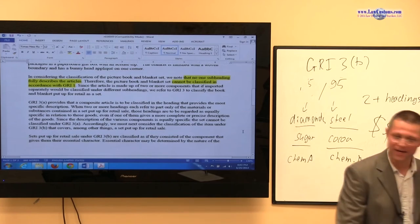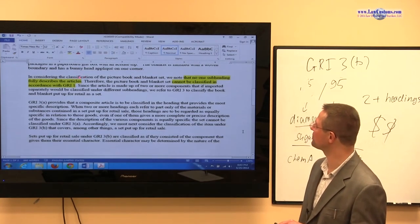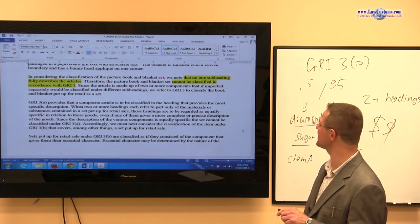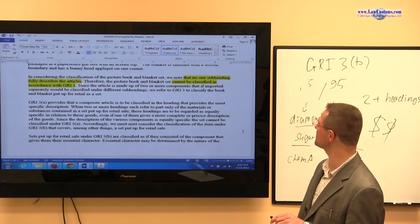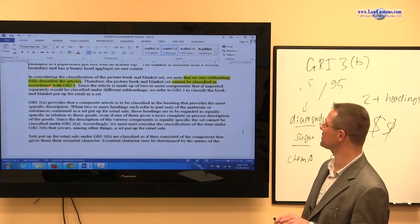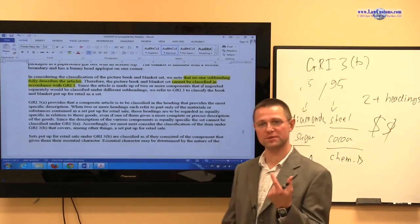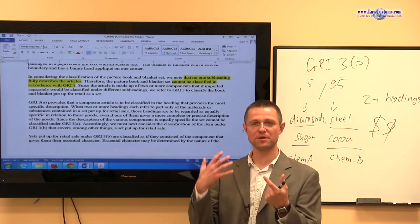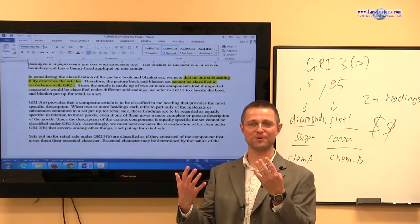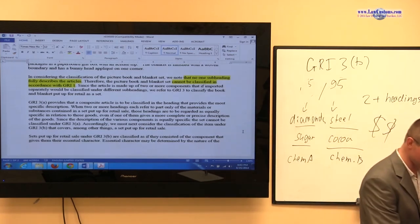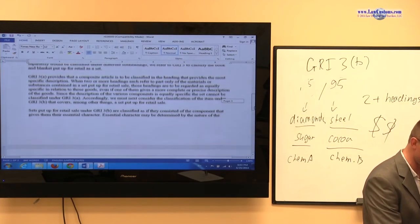In considering tariff classification of the picture book and blanket set, we know that no one subheading fully describes the article. So they cannot be classified under GRI 1. That means there is no one provision that says books plus blankets, right? So they go on into the discussion of GRI 3B.